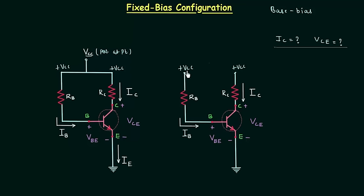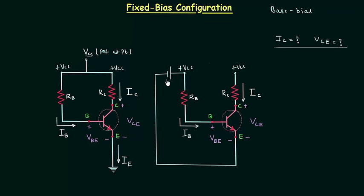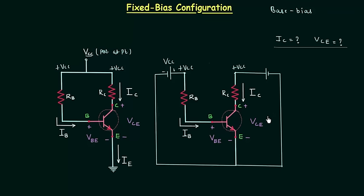Before starting the calculation, I will represent the biasing potential Vcc as a potential difference. Vcc is positive, so I will connect the positive plate here. Ground has zero potential and will act as the negative terminal. I will complete the input circuit first, then in the same way complete the output circuit, connecting the positive plate at the top and the negative plate to ground, since ground is at the lower potential.